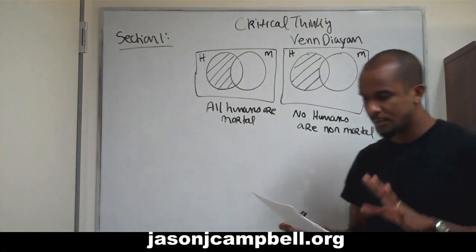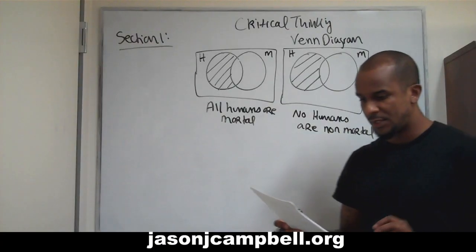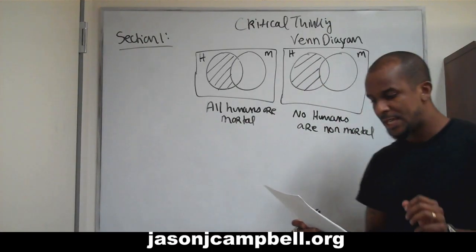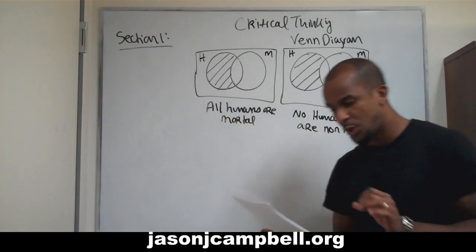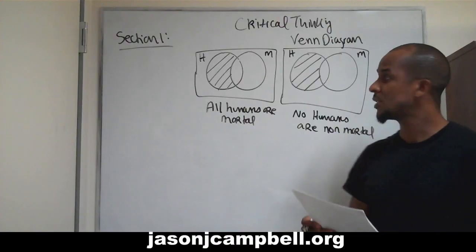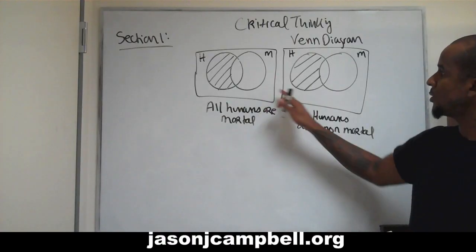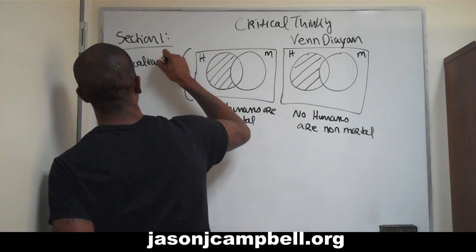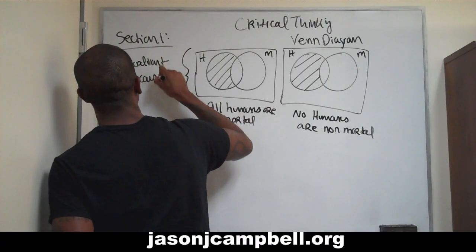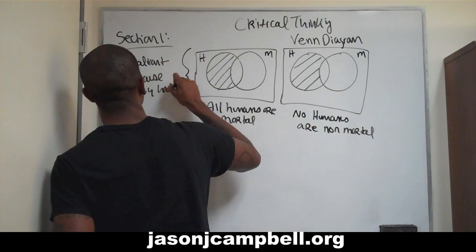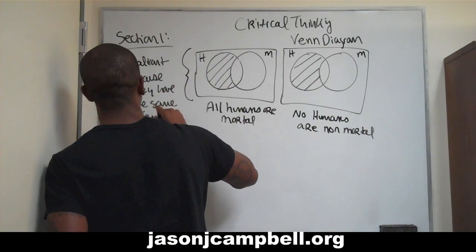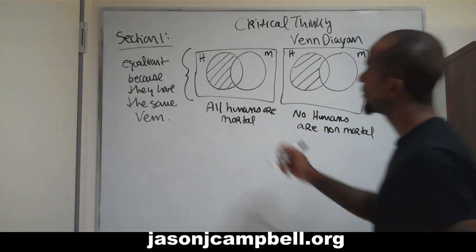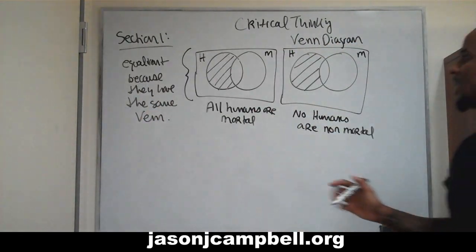Trying to go slow, trying to go real basic. The point of this is the following: the statement 'all humans are mortal' is equivalent to the statement 'no humans are non-mortal,' because obviously they share exactly the same Venn diagram. These two statements are equivalent because they have the same Venn.